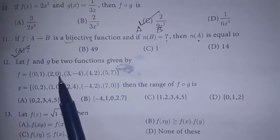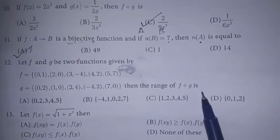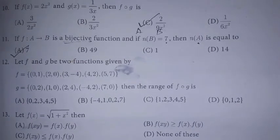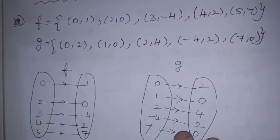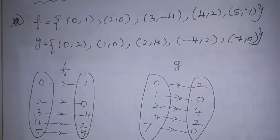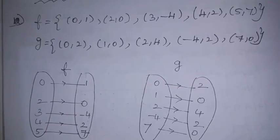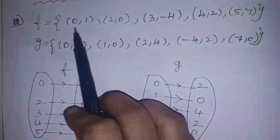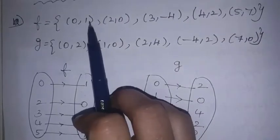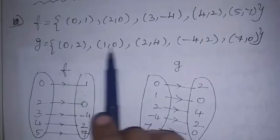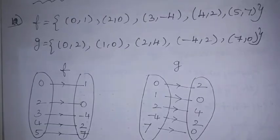Next, 12th sum: let f and g be two functions. f is one function and g is one function. The range of f∘g is dash. Now we have to find the range of f∘g. To find f∘g, first you make an arrow diagram with the elements. The values are 2, 0, 4, 2, 0.